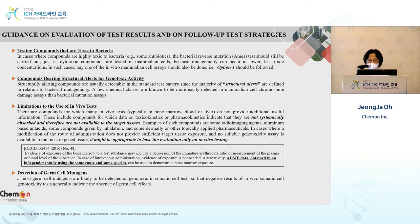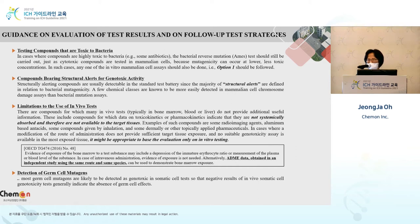Secondly, if there is a compound that has a structural alert, we can utilize Q-STAR assay in order to see if there is any alerting structure, and of course it is related to pharmaceutical impurities. Compounds that have a structural alert and produce positive results in the Ames test have carcinogenicity potential, which we must take into consideration. Sometimes, rather than the Ames test, some compounds can be detected better in the chromosomal aberration assay.